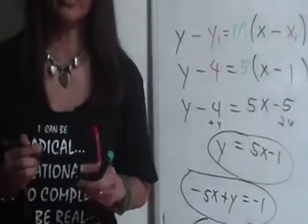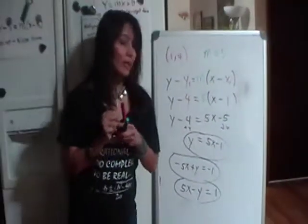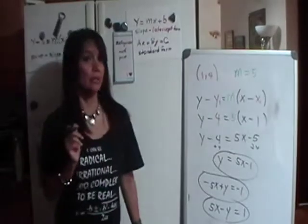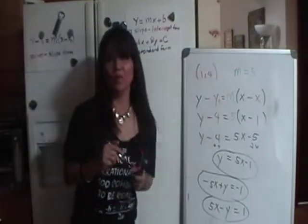And there you go. That's how you write an equation of the line if you're given a point on the line and the slope of the line.